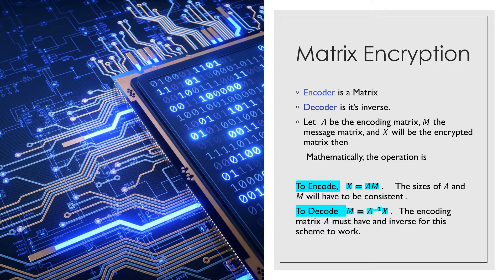The encoding matrix A must have an inverse. Otherwise, if it doesn't have an inverse, then we cannot convert it into a decoded matrix. When I say A-inverse should exist, that means the determinant of A should not be equal to zero. Also, the matrix A must be a square matrix.